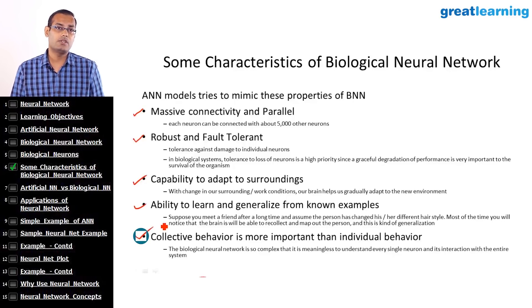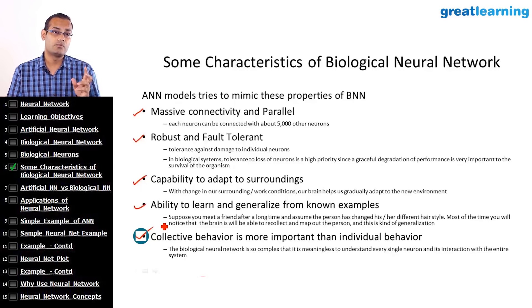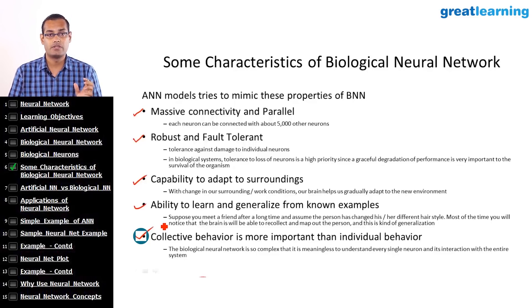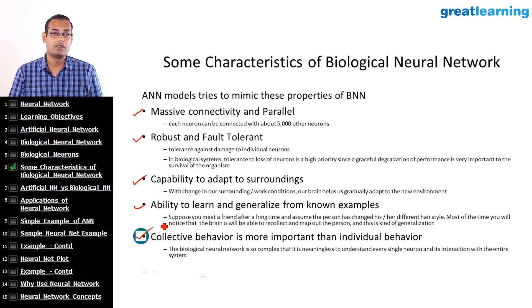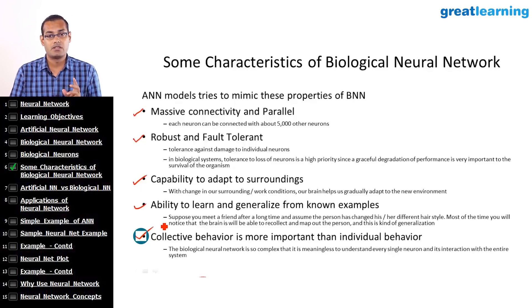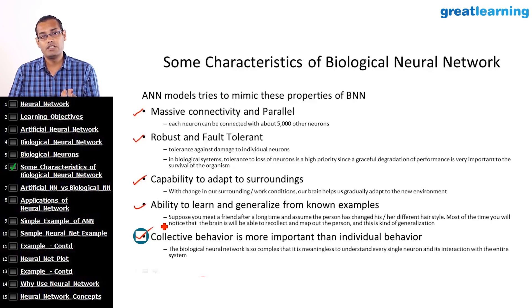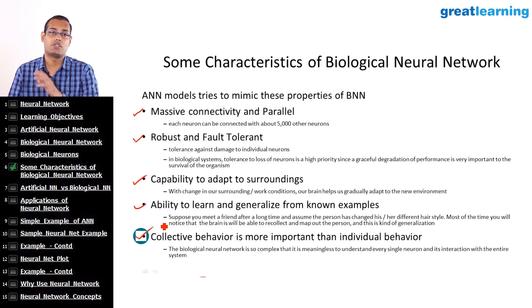Finally, the collective behavior of the neural network — that is, the collective behavior of our brain — is more important than the individual behavior of the neurons. This same characteristic of the biological neural network is what artificial neural networks try to mimic. When you build a neural network model, what is more important is how the overall model performs rather than the synaptic weights of the individual variables and neurons connecting within the artificial neural network.